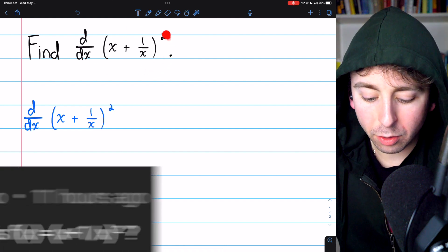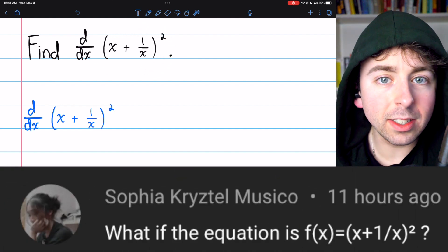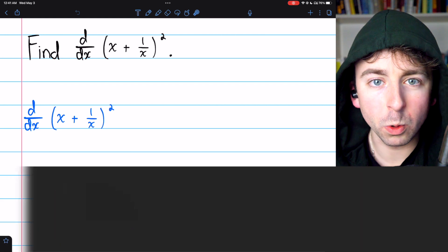To find the derivative of x plus one over x squared, we'll need to use the chain rule and the power rule.